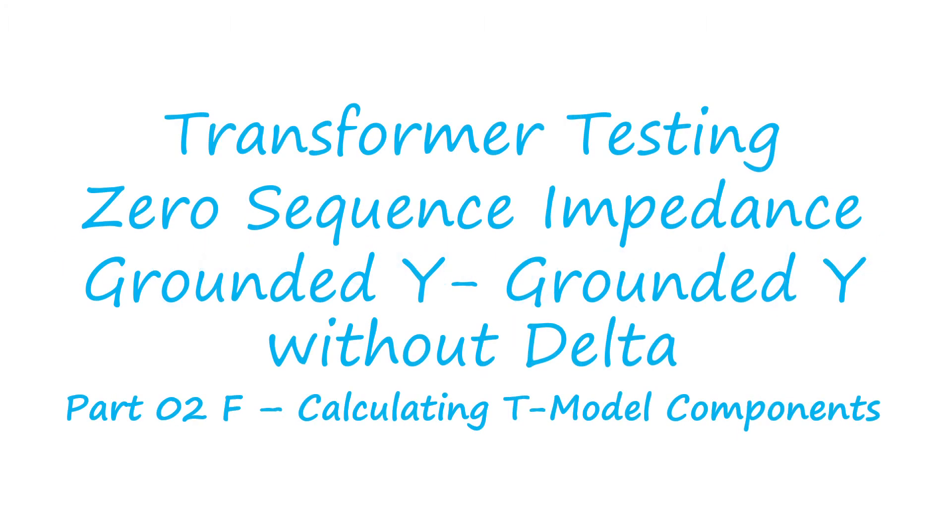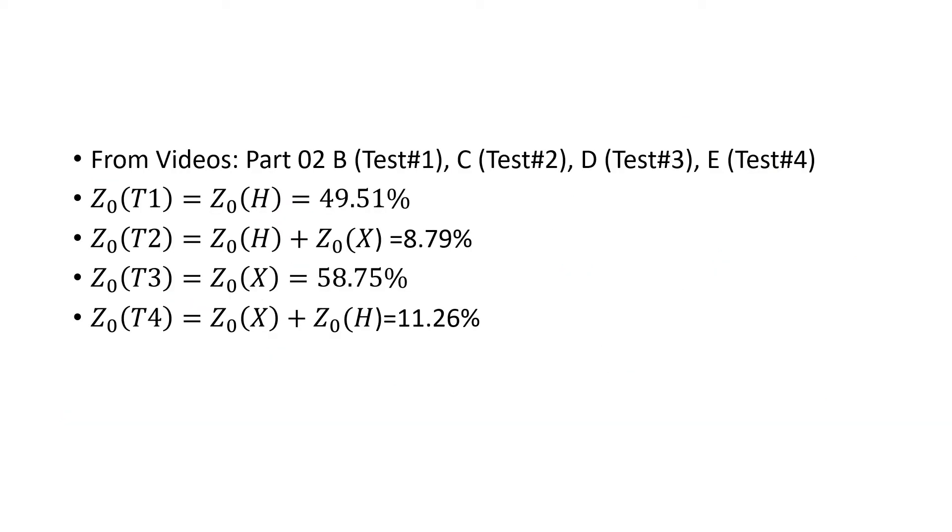Hello and welcome to Engineer Simple, part 2F of transformer tests in zero sequence impedance for grounded Y grounded Y without a delta. I'll be calculating the T-model components. From the previous videos part 2B, C, D, and E, we calculated or measured the zero sequence impedance obtained from test 1, test 2, test 3,